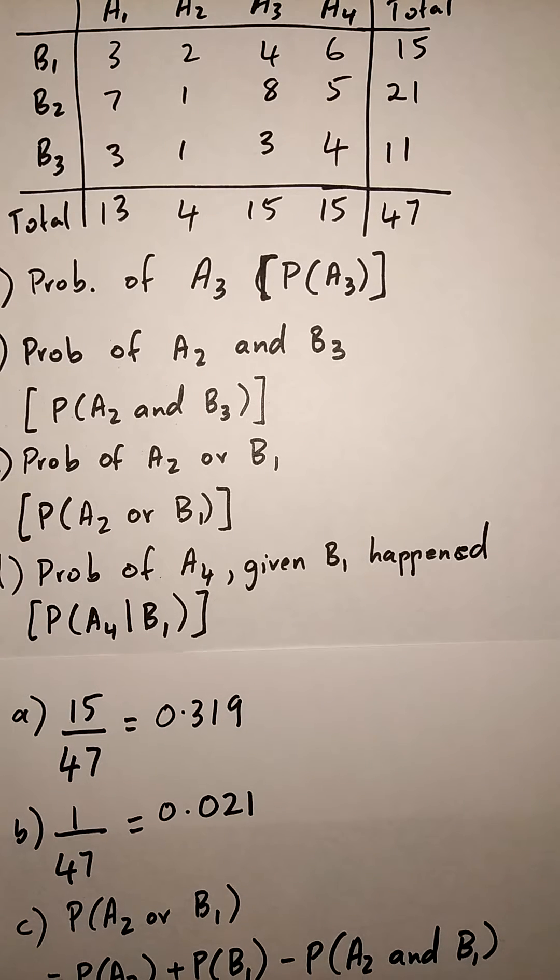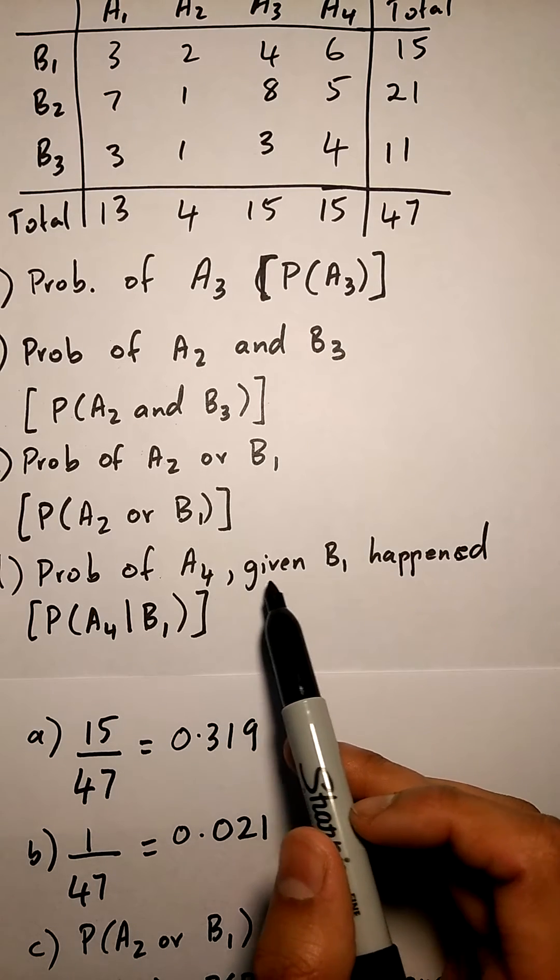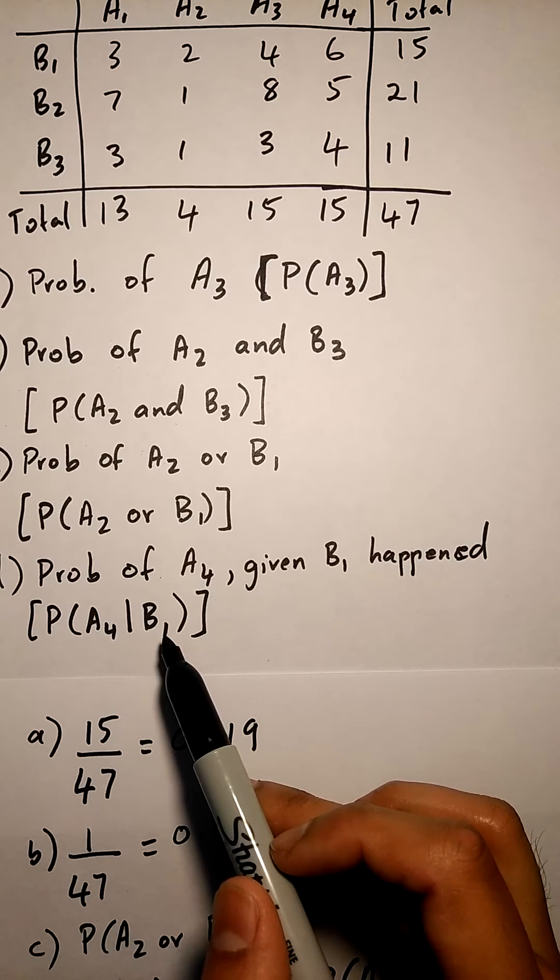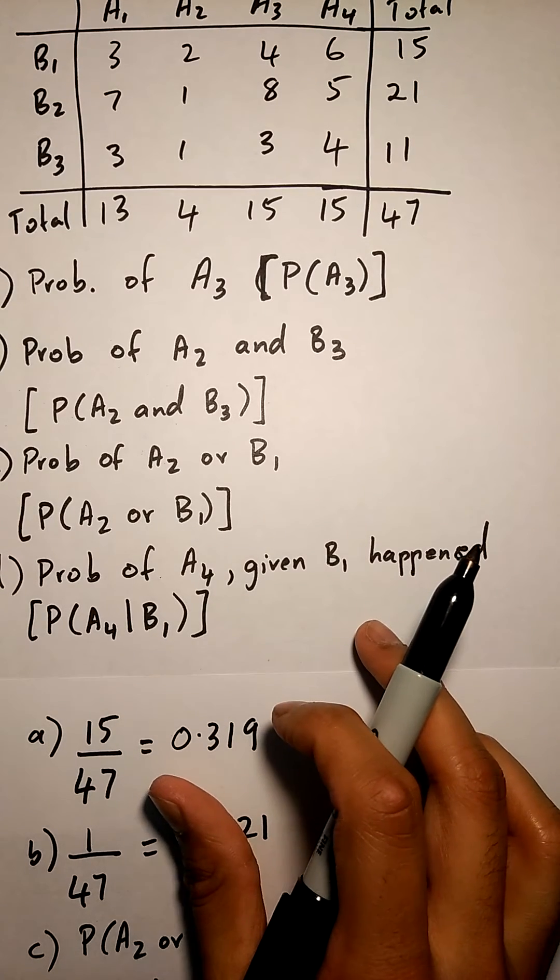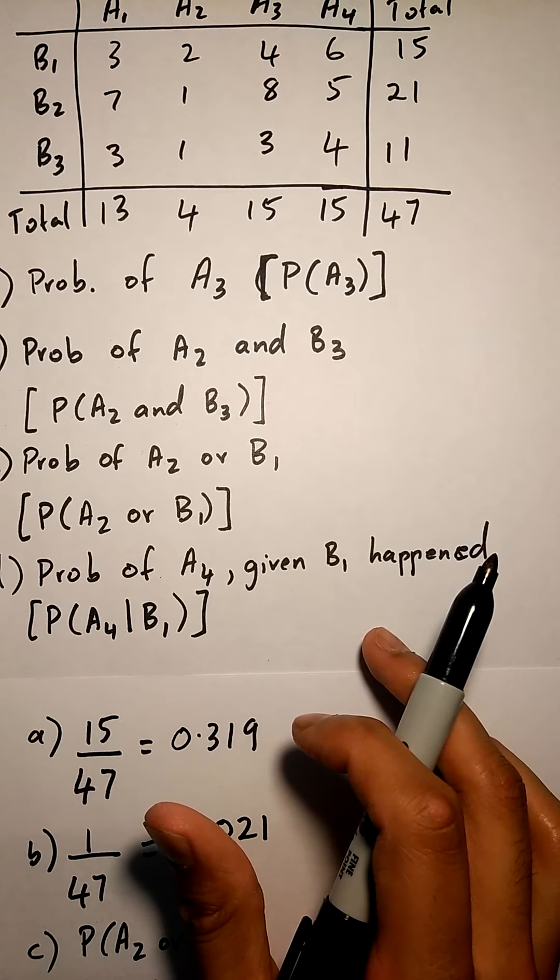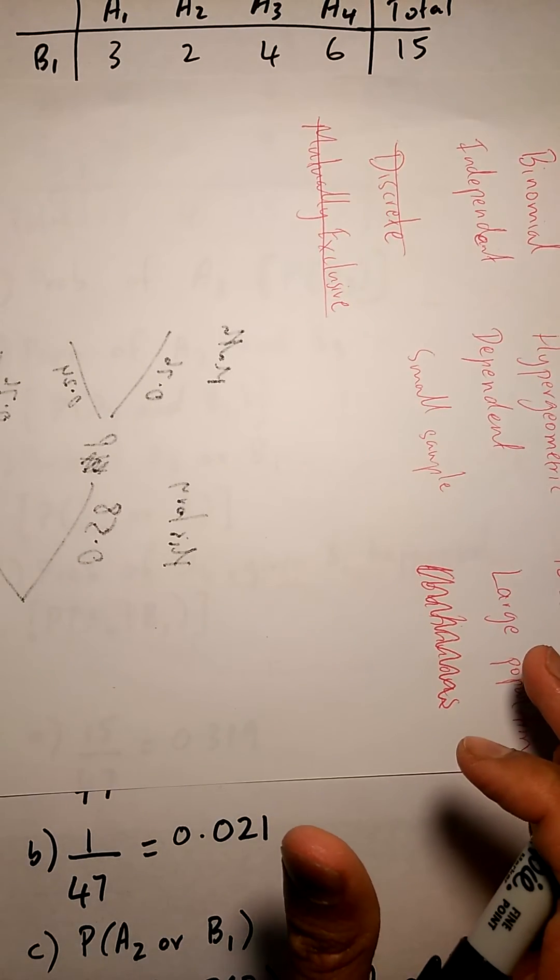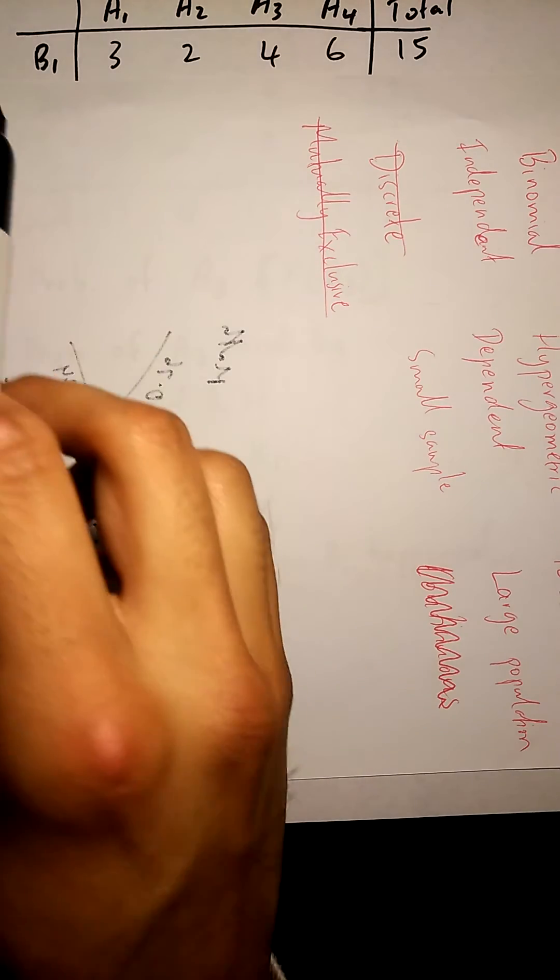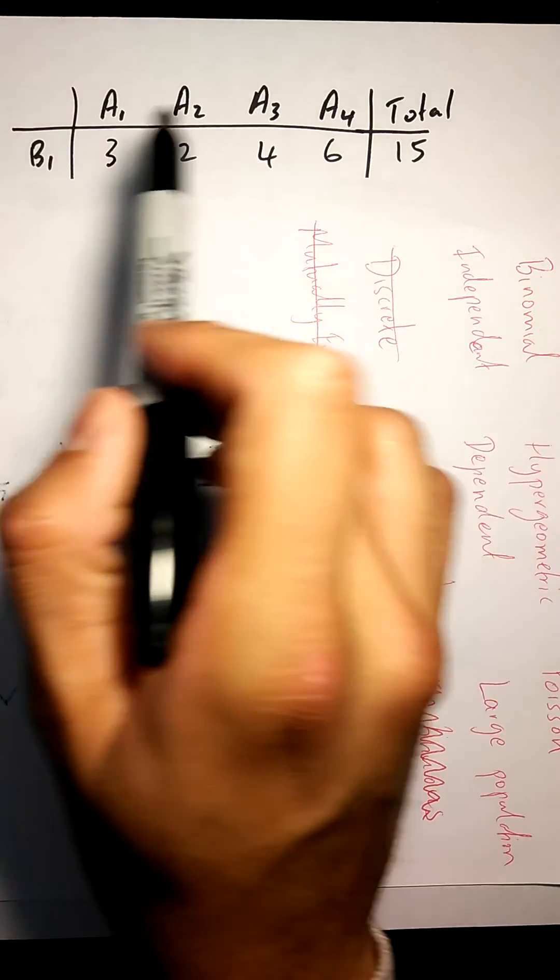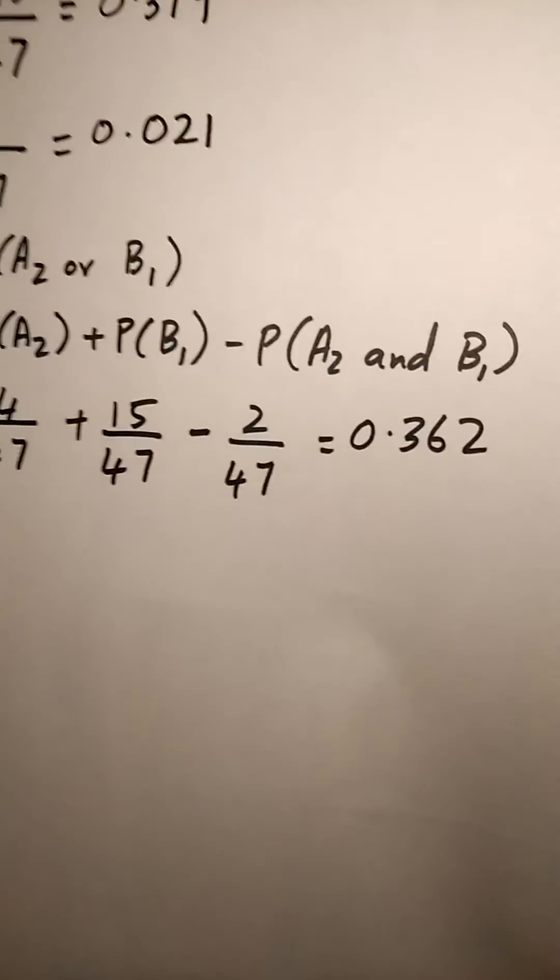If you're solving a question like this, the first thing you're going to do is, if this question says given B1 happened, you're going to cover the rest of the table so that only B1 shows. In this case, I'm going to make the entire rest of that table disappear because the only thing that we care about now is B1. This means that B1 has happened. We are trying to find the probability of A4 given that B1 has happened.